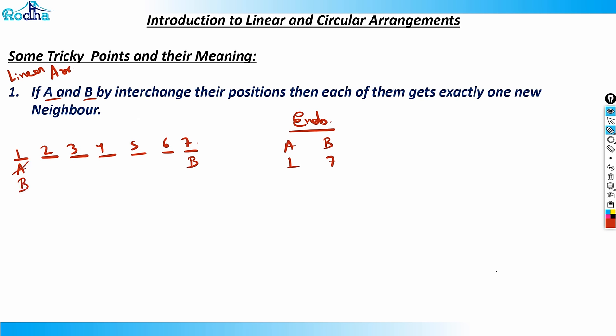One case: A and B are at the ends — A at position one and B at position seven. If B comes to A's place and A comes to B's place, then two was A's neighbor and six was B's neighbor. Now two is B's neighbor and six is A's neighbor — each gets exactly one new neighbor. So one case that should come to mind: both persons can be at the ends.